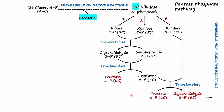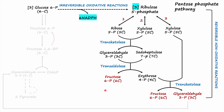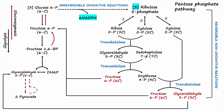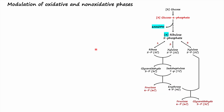If the demand for NADPH is continuously high and the pentose phosphate pathway stopped at the non-oxidative phase, cells could no longer generate NADPH, inhibiting reductive biosynthesis. To synthesize more NADPH, the glycolytic intermediates fructose 6-phosphate and glyceraldehyde 3-phosphate are channeled back into glycolysis and converted into glucose 6-phosphate via gluconeogenesis, allowing re-entry into the pentose phosphate pathway to synthesize more NADPH through the irreversible oxidative reactions.